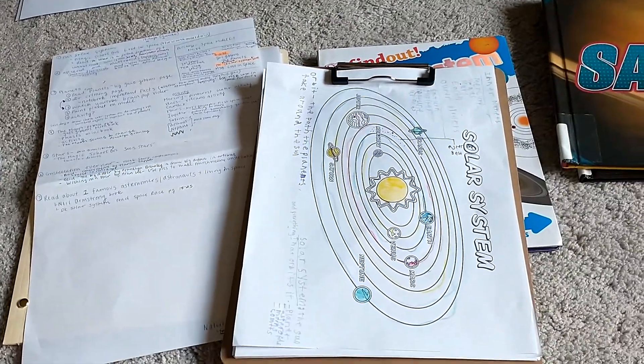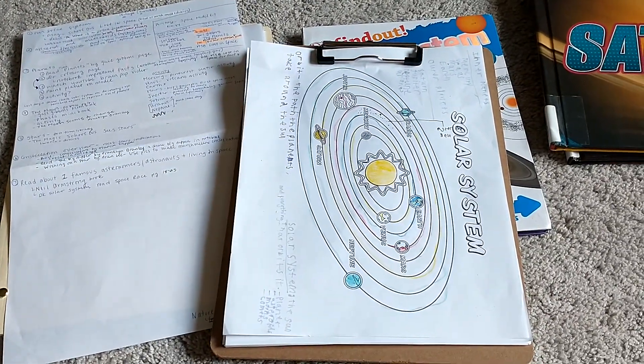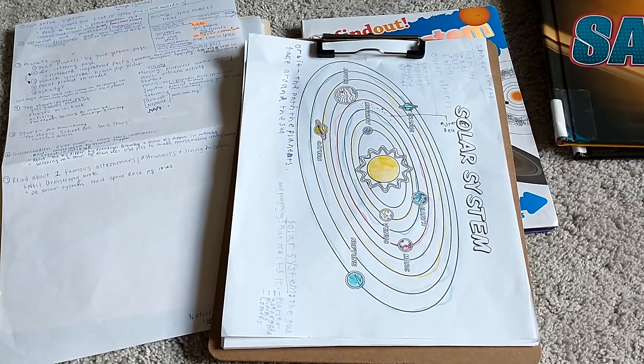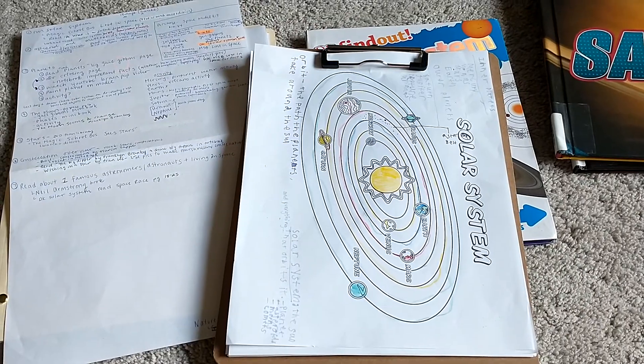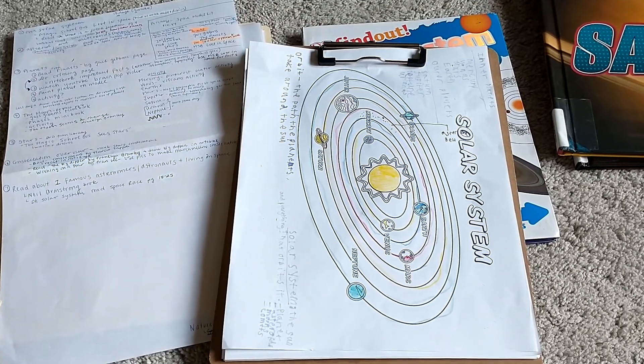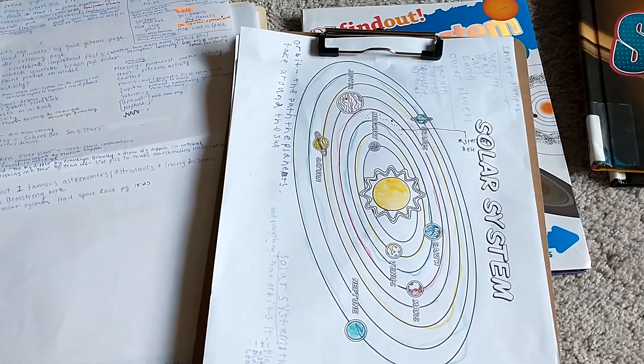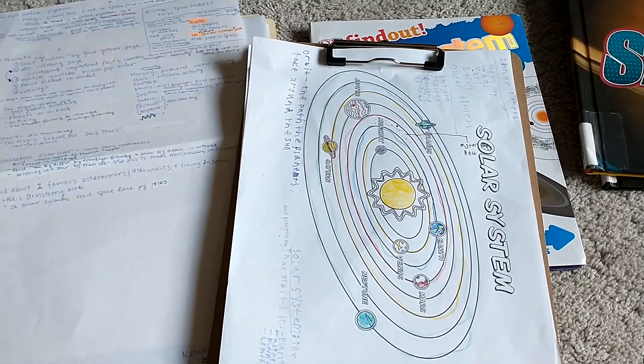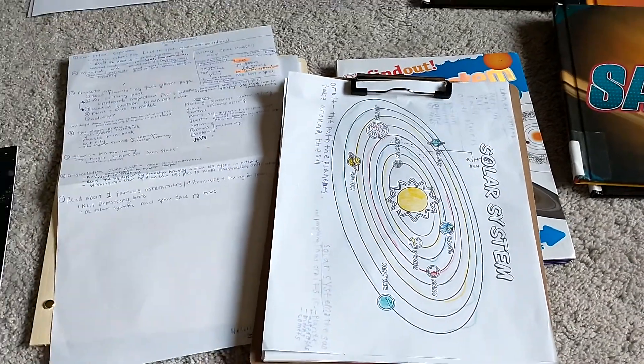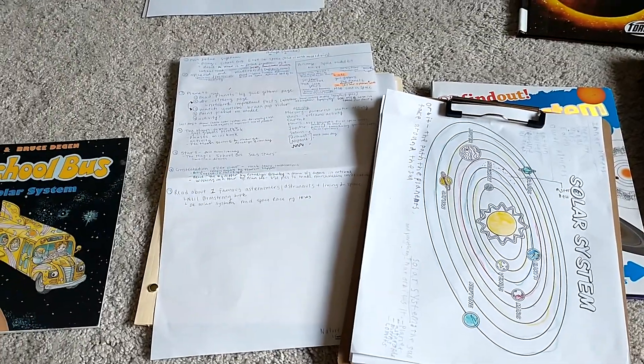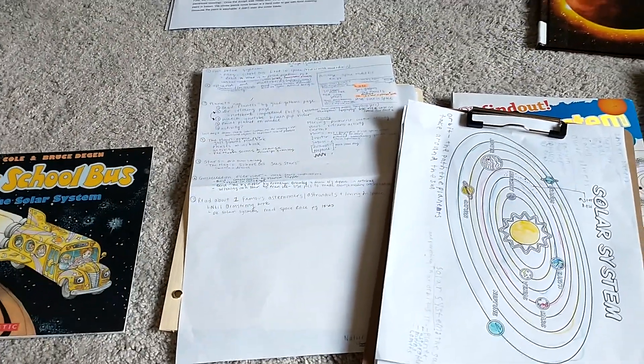And then you can create your own notebook and pages. Or you can even just use a 25 cent notebook that you get at Target during the school supply sale, and you can have them draw the solar system on it and define some vocabulary words. So that's how I do my basic unit studies. Let me know if you have any questions. Thank you for watching. Bye.